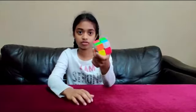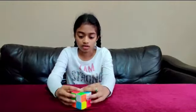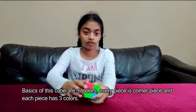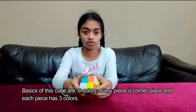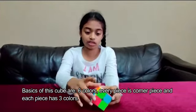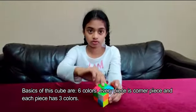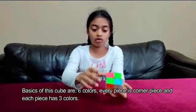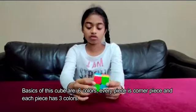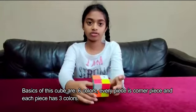I'm showing you how to solve this Rubik's Cube, and some basics are that every piece on this cube is a corner piece, since every piece has a point, and there's three colors on a corner piece, and there's six colors on the Rubik's Cube.